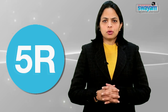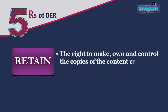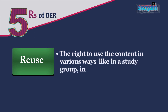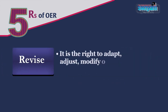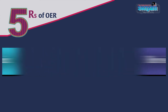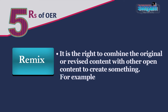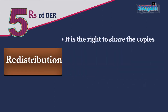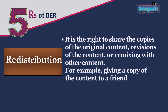In this context, we may discuss the 5R framework proposed by David, which describes the openness part of OERs. First is Retain — the right to make, own, and control copies of the content created by someone. Next is Reuse — the right to use the content in various ways, like in a study group, in a video, on a website, or in the classroom. Third is Revise — the right to adapt, adjust, modify, or change the content into another language. Next is Remix — the right to combine the original or revised content with other open content to create something new, for example incorporating content into a mashup. Next is Redistribute — the right to share copies of the original content, revisions, or remixes with others, for example giving a copy to a friend.